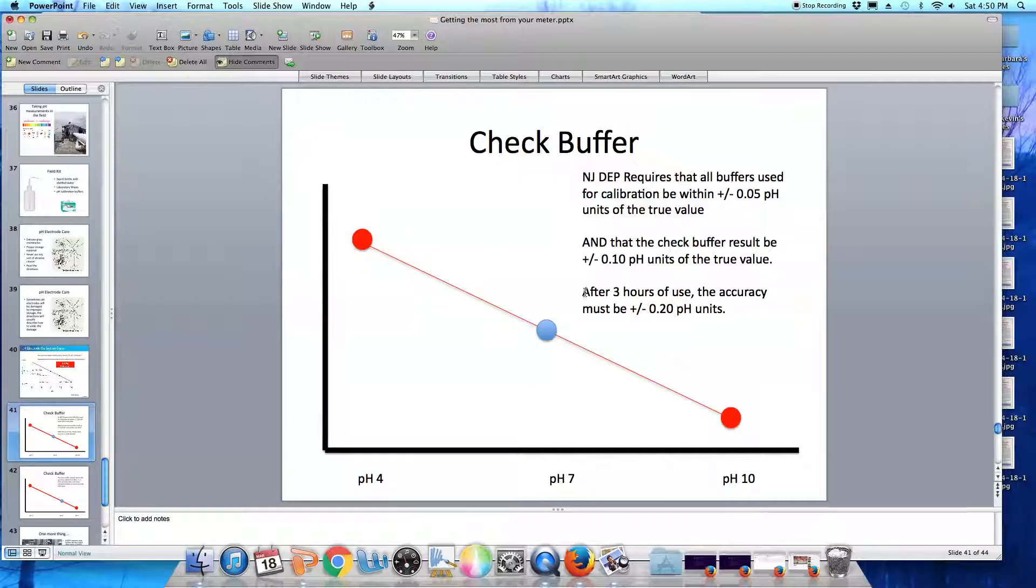All pH meters can drift, so after three hours of use, you should double check your meter with your check buffer. Re-read that pH 7 buffer as if it were a sample, and it must be within plus or minus 0.2 pH units of pH 7. So in this example, after three hours, any value between pH 6.8 and pH 7.2 means that your meter is still in calibration and you can continue to make measurements. If it doesn't meet this criteria, you must re-calibrate your meter before you make any additional measurements.